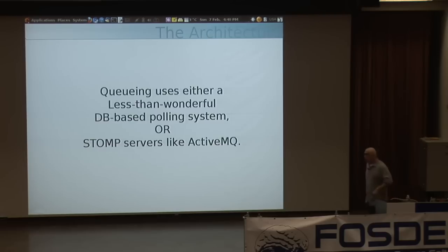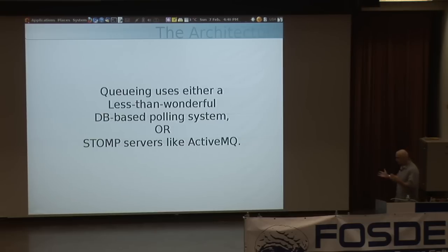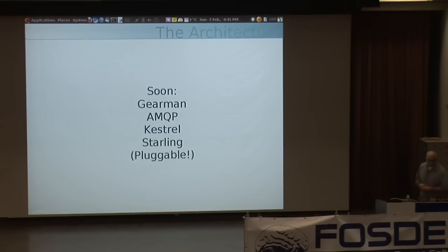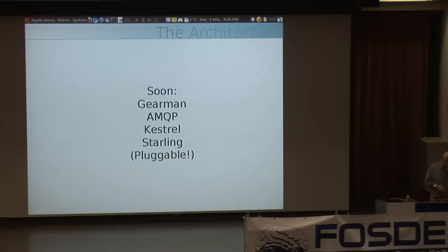Our queuing is pluggable — we can use a number of different queuing systems. One is a clunky DB-based polling system where we dump stuff into a big table and check if anything new is there. If you can run something better, we support the Stomp protocol with a Stomp plugin, so servers like ActiveMQ or RabbitMQ will work too. There are also plugins for Gearman and AMQP, which is the native protocol for RabbitMQ. There's a pair of servers called Kestrel and Starling, which are what Twitter uses.